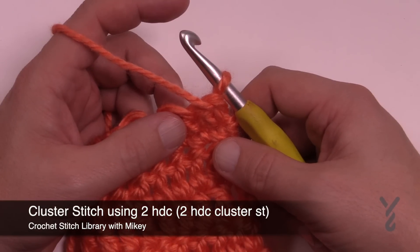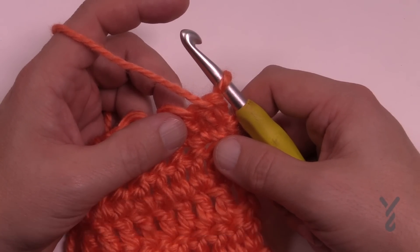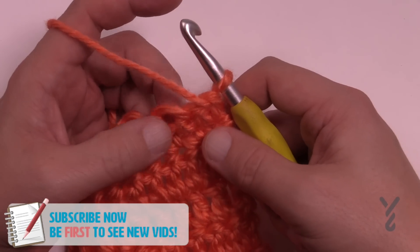In this tutorial we're going to do a cluster using the half double crochet, very similar to the puff stitch, but it's completed differently. So here's how we're gonna do it.